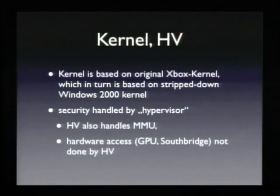Security is all handled by the hypervisor. It checks the signature of games — if the signature doesn't match, code pages won't be executable; only if the signature matches is the code page flagged as executable. The hypervisor is the only code in the system allowed to talk to the MMU to configure the CPU. If you don't own the hypervisor, you cannot load code into memory. Hardware access, however, is not done through the hypervisor — games and the kernel directly map PCI registers into user space and write directly to GPU and Southbridge registers.